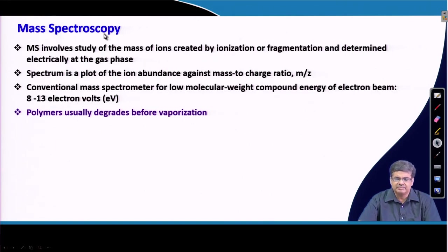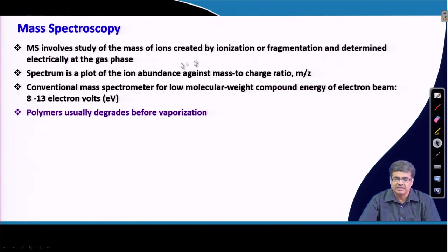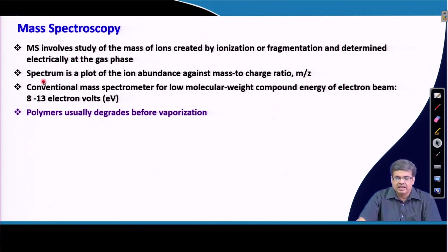In general, mass spectroscopy involves the study of mass of ions created by ionization of polymers. It is a form of ionization or fragmentation determined electrically at the gas phase. The spectrum in mass spectroscopy is a plot of ion abundance against mass-to-charge ratio, or simply m/z.